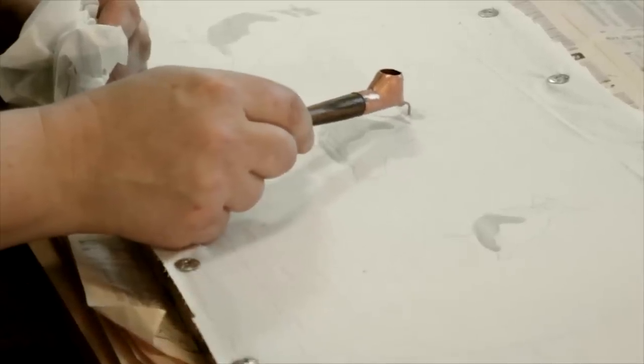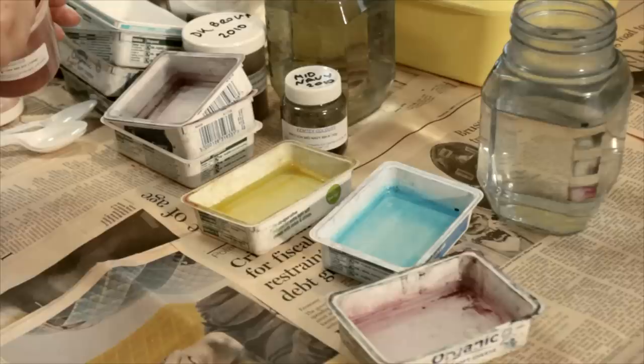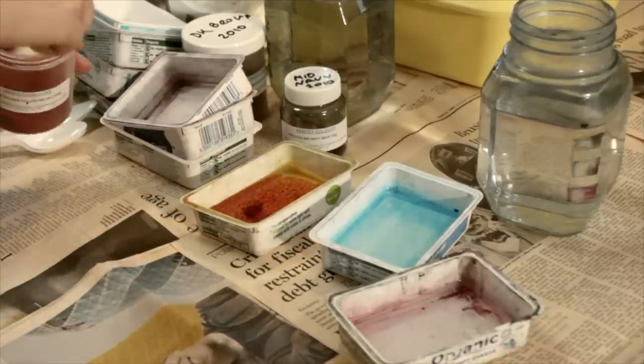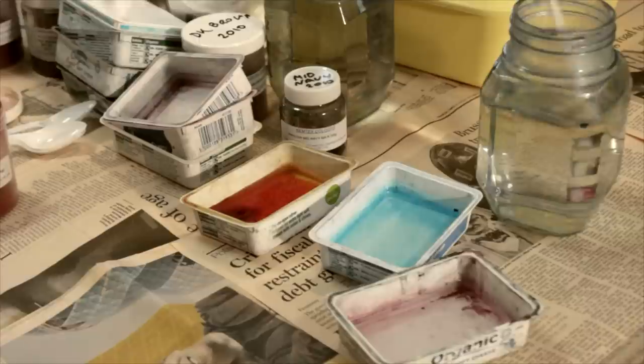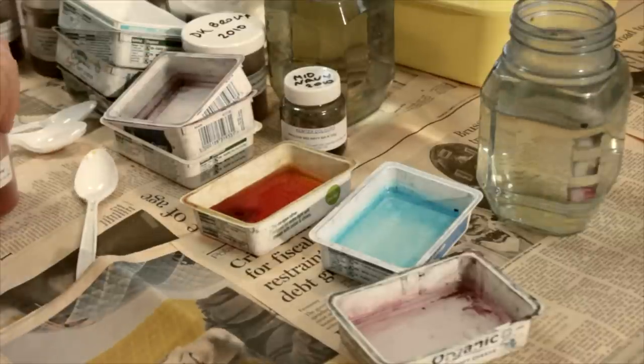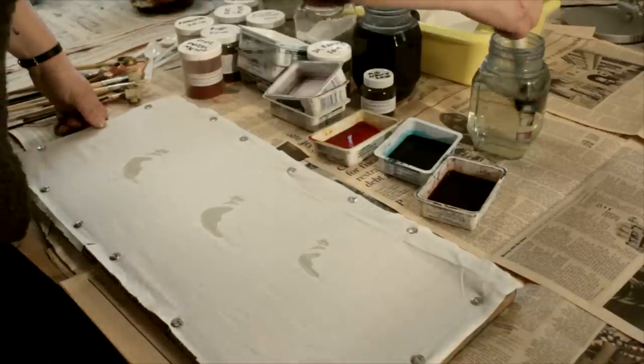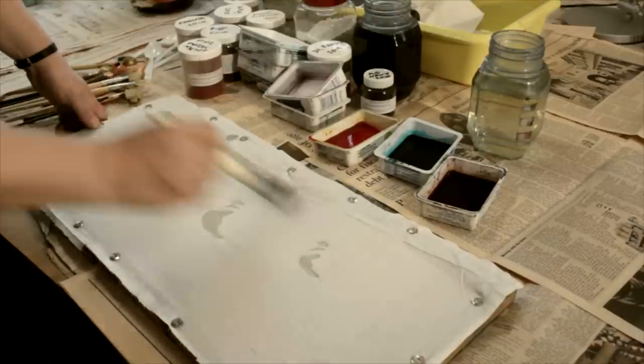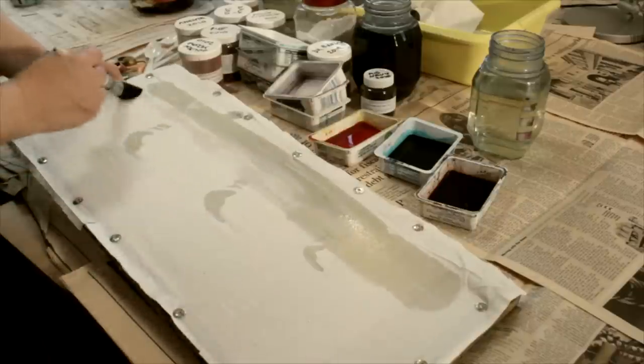The next stage is to apply some colour and that's done with these dyes, the fibre reactive dyes or sometimes called proscian dyes. They're mixed with water and a fixative, soda ash and salt. I start off with a very pale wash of colour. In fact I wet the fabric first so that the first dye that goes on is very soft.